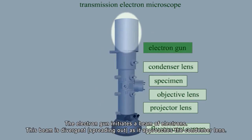The electron gun initiates a beam of electrons. This beam is divergent, spreading out as it approaches the condenser lens.